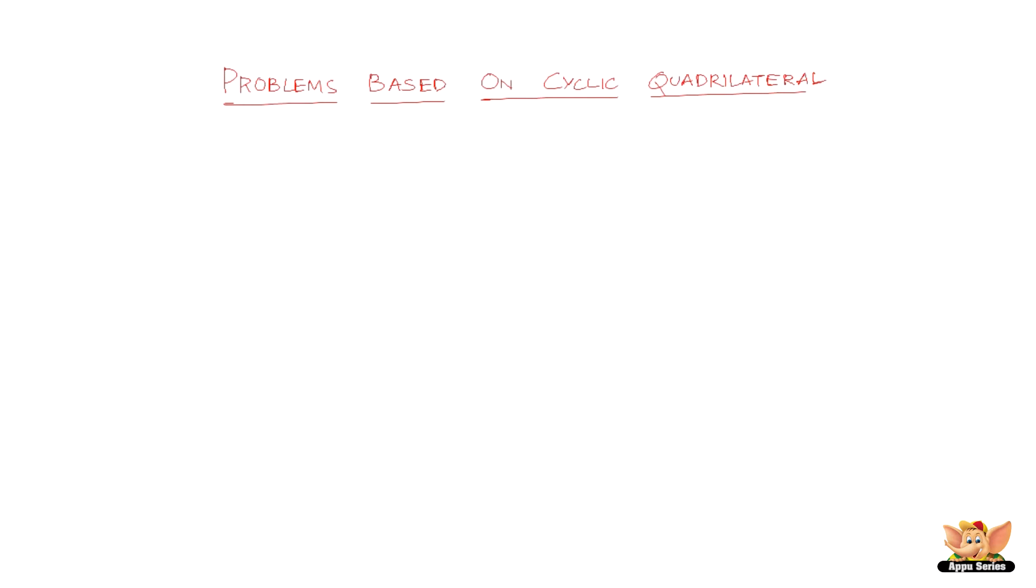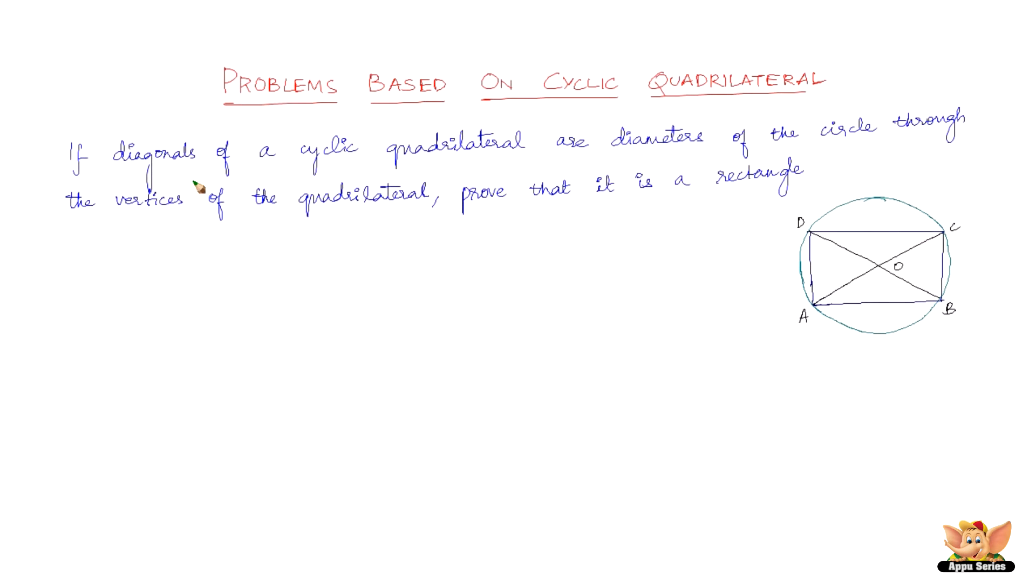In this video, let us continue to solve problems based on cyclic quadrilateral. Now here we have a question which reads like this: if diagonals of a cyclic quadrilateral are diameters of the circle, so here we have the figure.